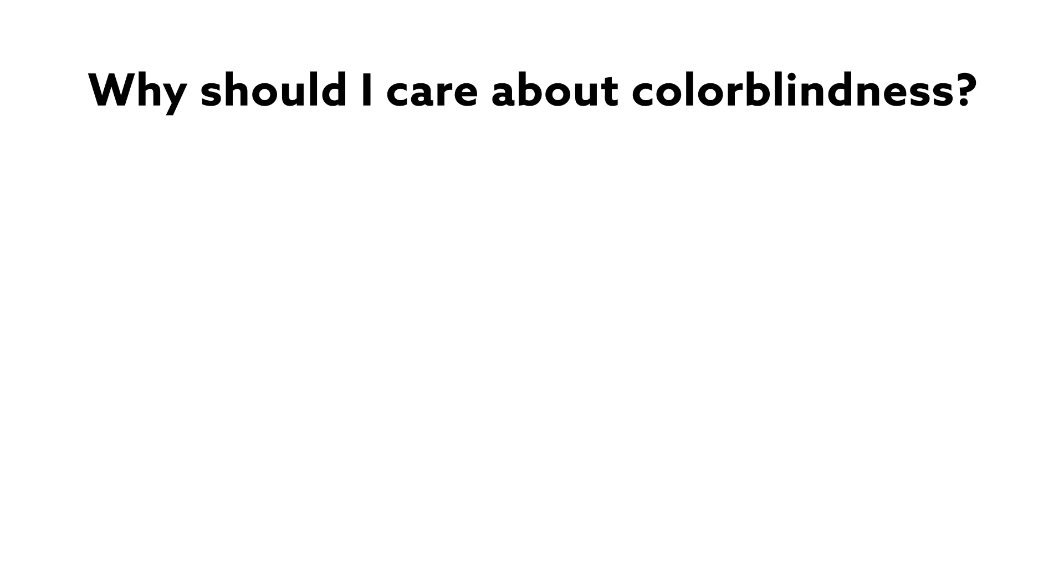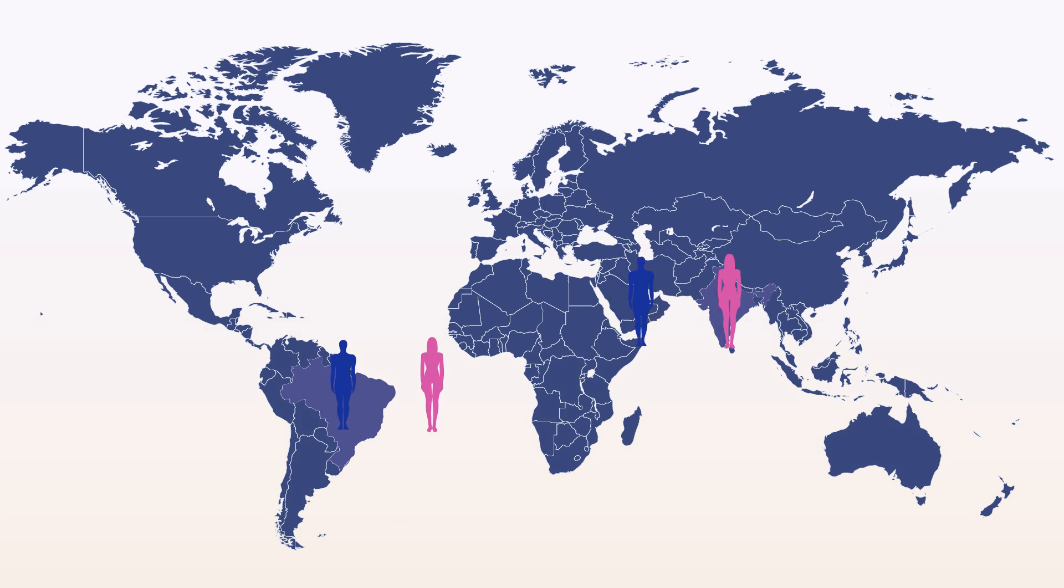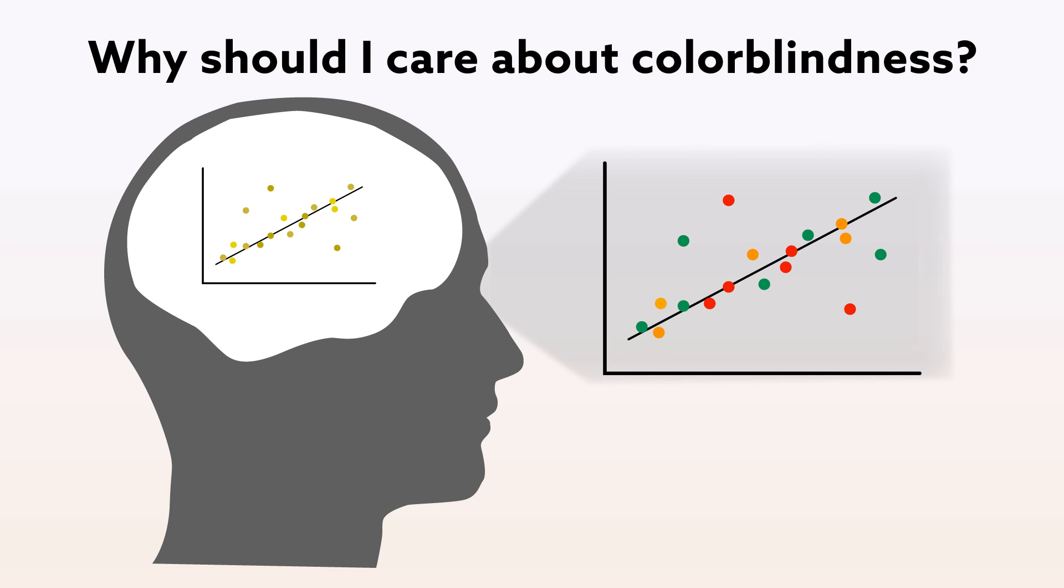Globally, colorblindness affects approximately 8% of men and 0.5% of women, with countries such as India and Brazil among the most strongly affected. With a large amount of research taking place in these countries, it's reasonable to assume that someone reviewing or reading your paper will be affected by colorblindness and may be unable to interpret your data as intended.